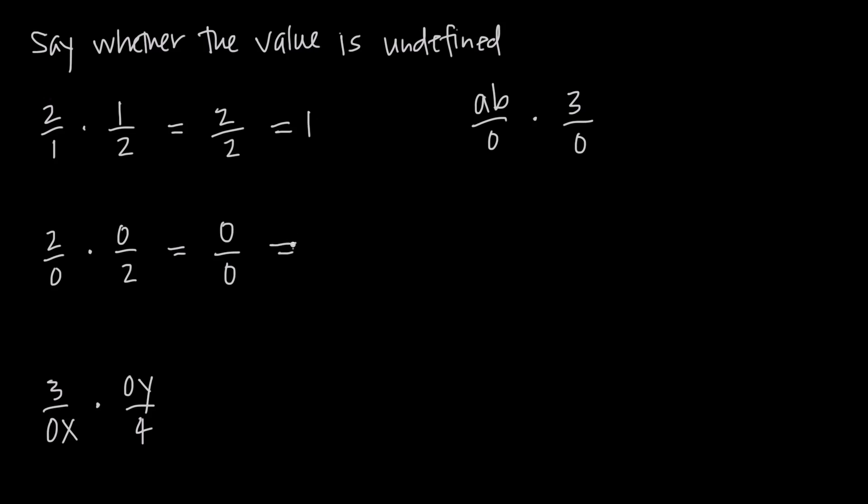0 over 0 is not equal to 1. It is undefined, and that's because 0 is a special number. We can't treat it exactly the same as we do non-zero numbers.